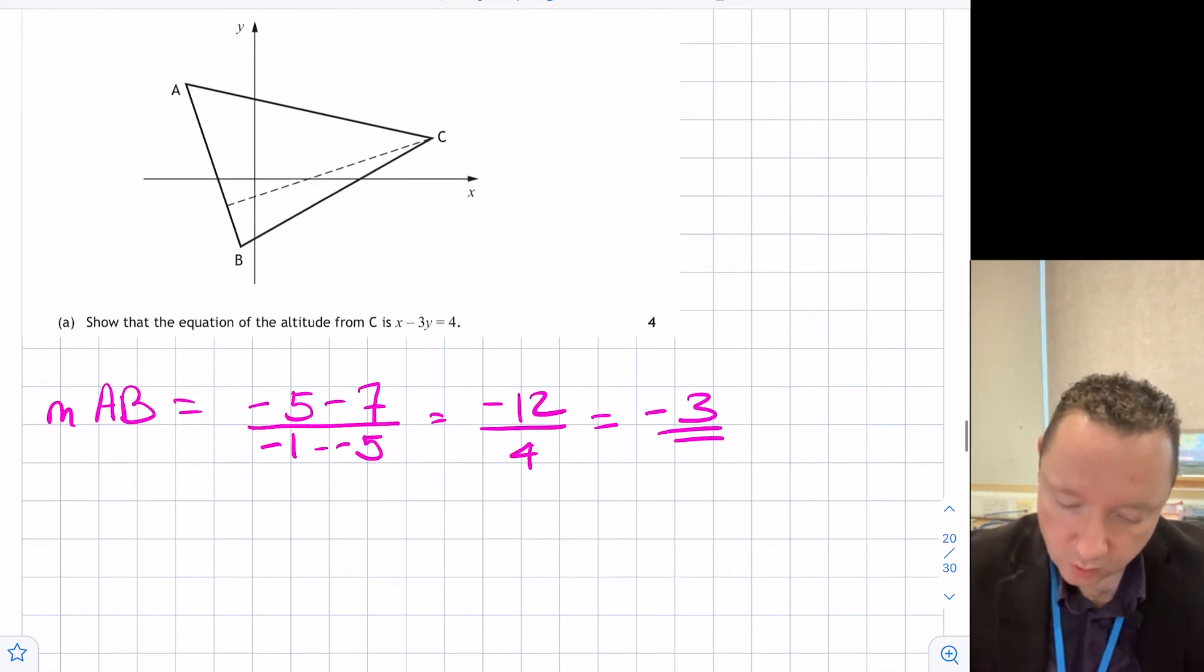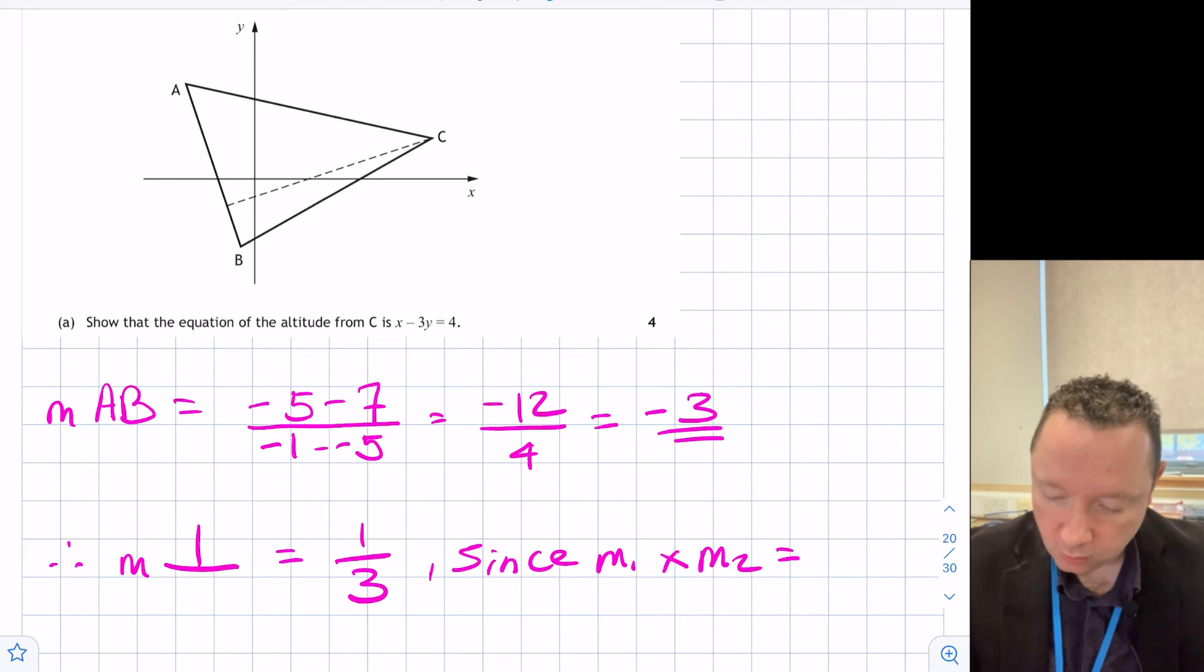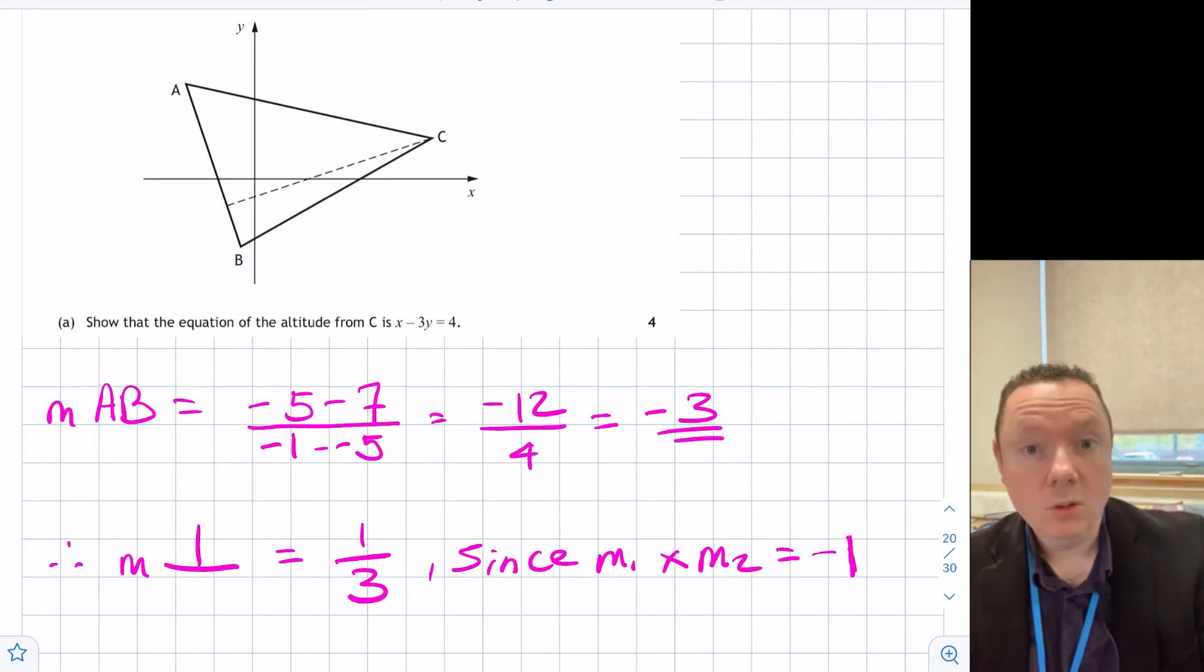So that means we immediately know, therefore, the gradient of the perpendicular equals a third. Look back at my previous videos on perpendicular gradients if you want to know how to do that, but that's because M1 times M2 equals -1. And we always need to write that statement to get our marks, remember.